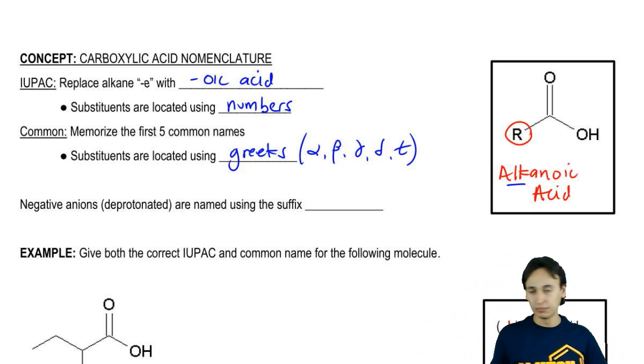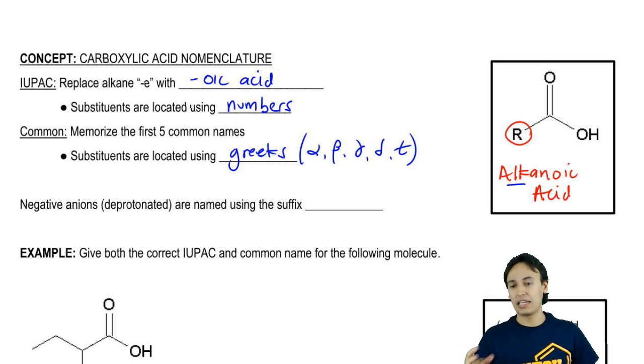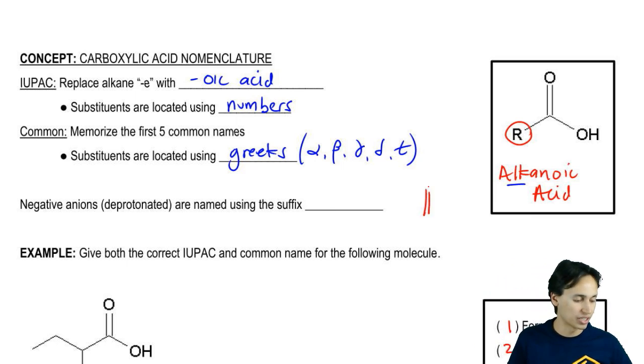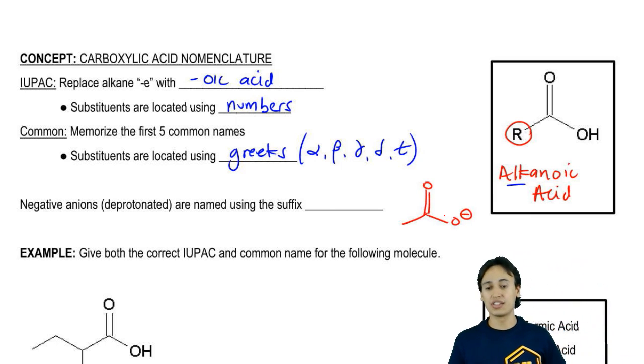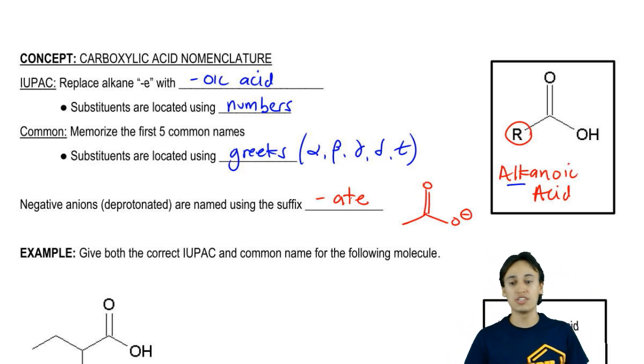Finally, one last thing and then we'll start some practice problems. Whenever you have a negative anion of a carboxylic acid, because you know that these things tend to give away their protons, so oftentimes you'll see a carboxylic acid as an O negative. Well, if you see it as an O negative, you're going to replace the oic acid and you're going to replace that with ate, ate being the suffix for a negatively charged species.